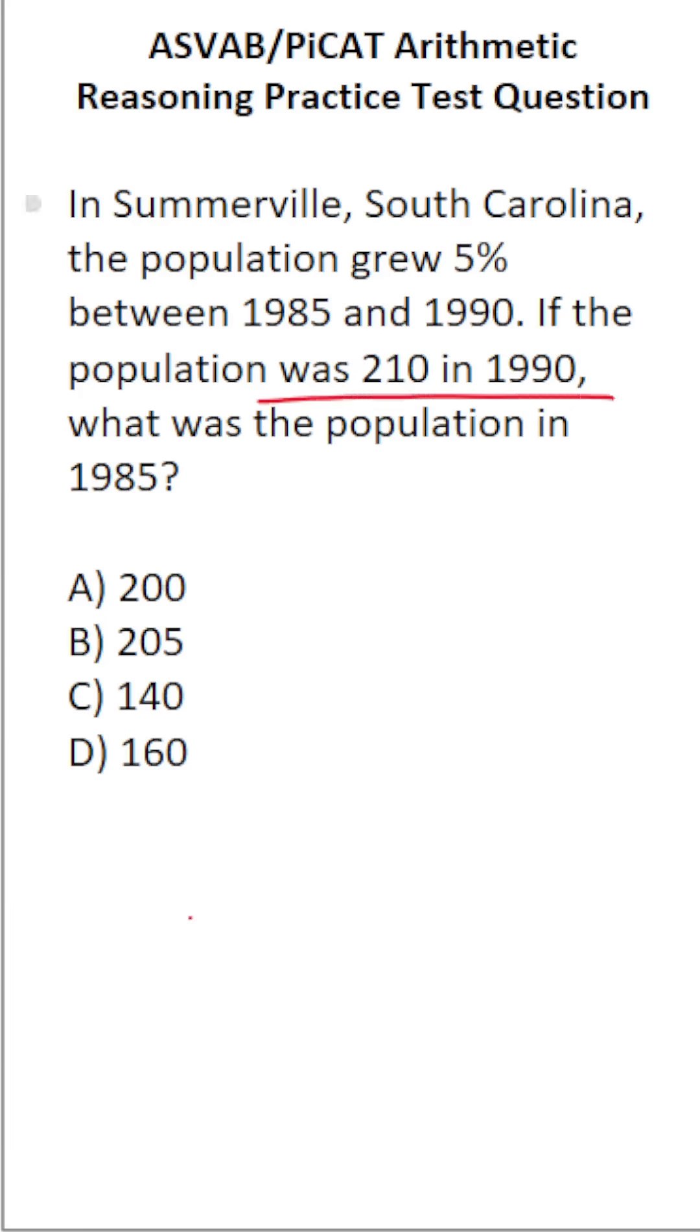Again, the population in 1990 was 210, so 210 is equal to—it grew by 5%, so it's going to be 1.05, that is 105% represented as a decimal.